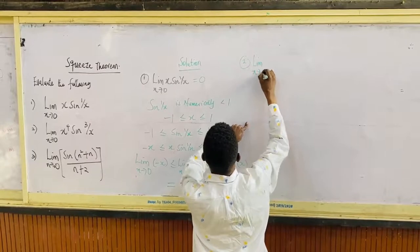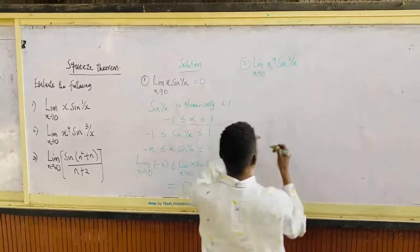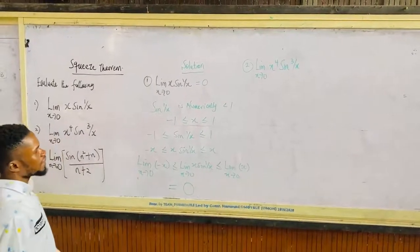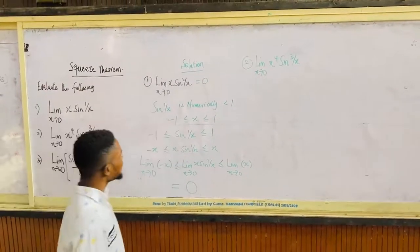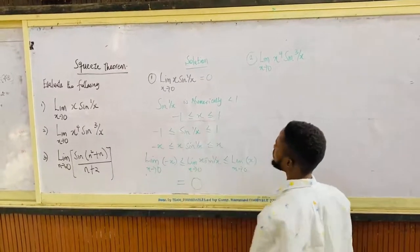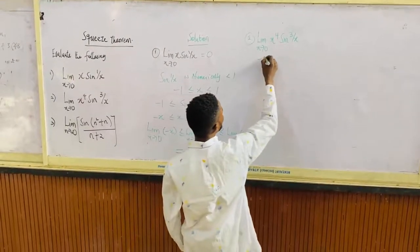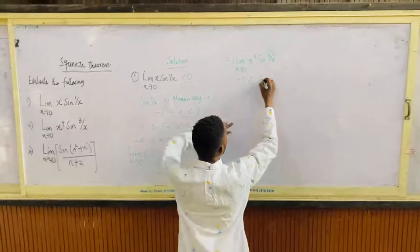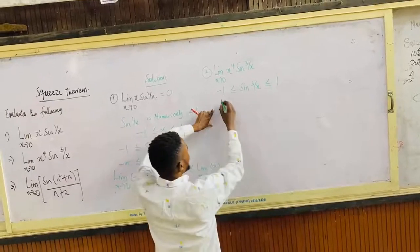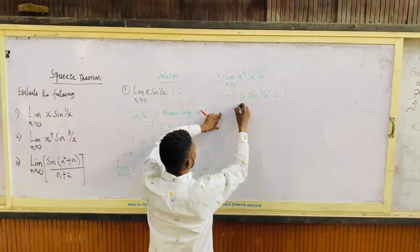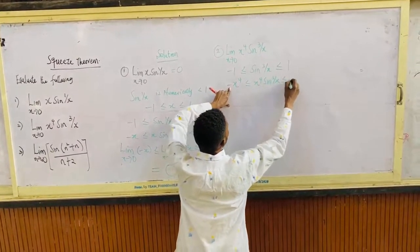Number two: limit as x tends to 0 of x to the power 4 sine 3 over x. Now remember that sine 1 over x is numerically less than 1, so that means it falls within this interval: minus 1 less than or equal to sine 3 over x less than or equal to 1. Similarly, minus x to the power 4 is less than or equal to x to the power 4 sine 3 over x less than or equal to x to the power 4.